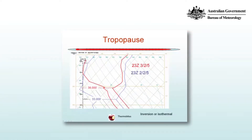The tropopause. In an earlier video we looked at the idea of the tropopause as a boundary between the troposphere, where all the weather that we're interested in occurs, and the stratosphere. What's shown here is an aerological diagram — a diagram where we might represent the temperature structure of the real atmosphere and its moisture profile.